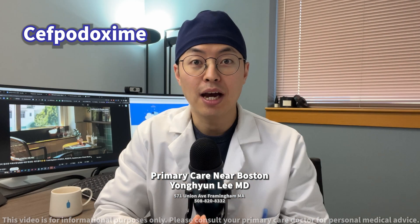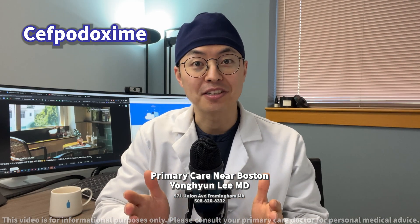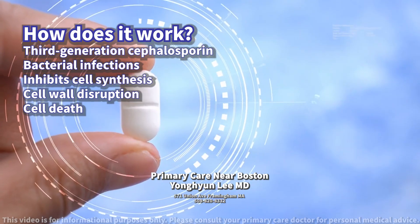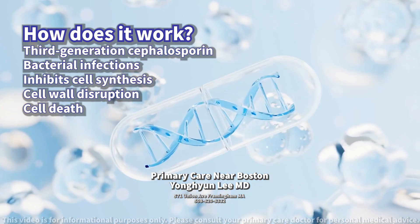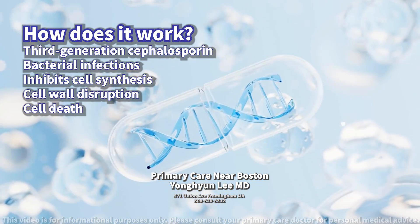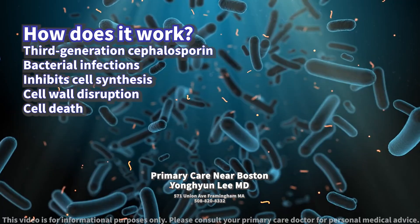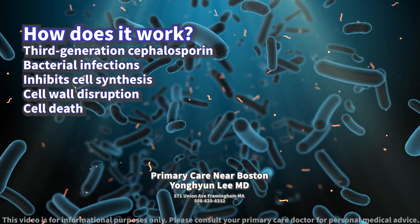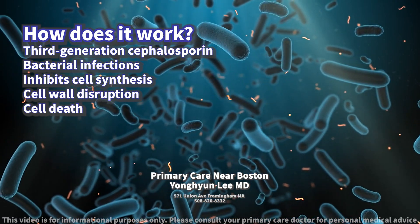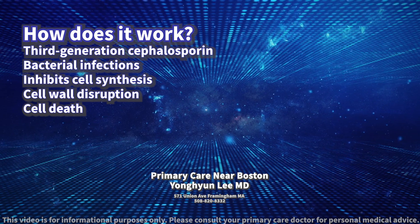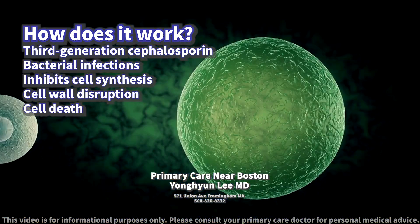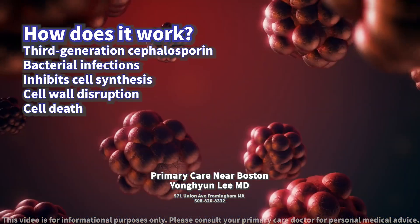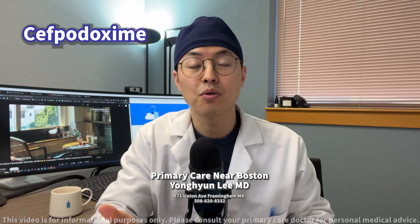Today we will discuss Cephpadoxime. How does it work? Cephpadoxime is a third-generation cephalosporin antibiotic that treats various bacterial infections by inhibiting the synthesis of the bacteria's cell wall, leading to cell death.